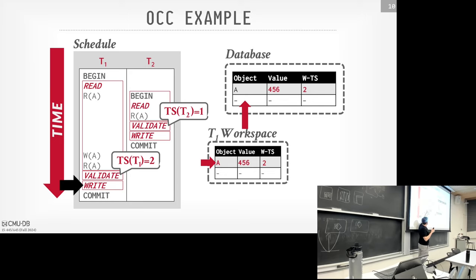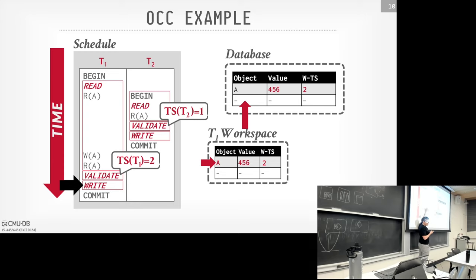The validation phase determines whether I have conflicts. You could look forward in time or backward in time. If you add a write, when the first transaction goes to validate, either it could abort or the other could abort, depending on how we're doing validation.